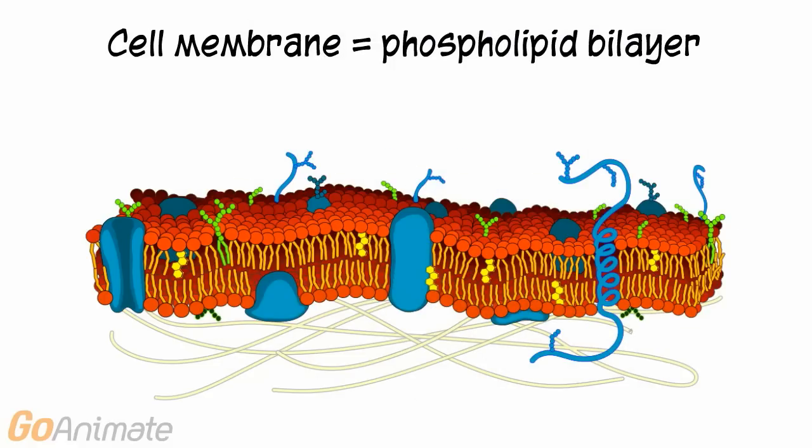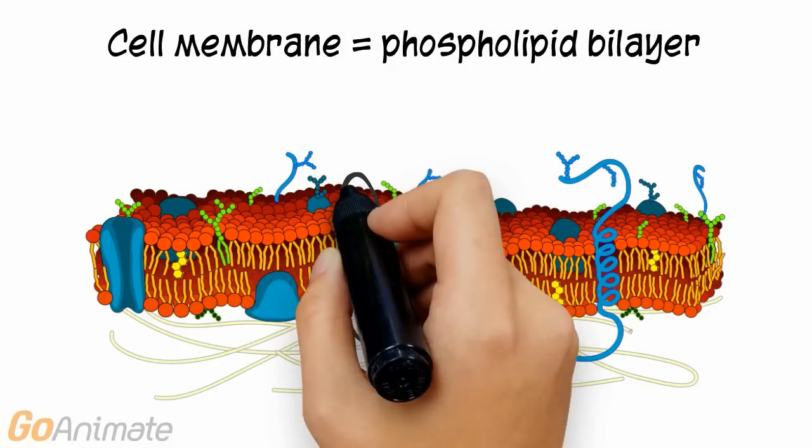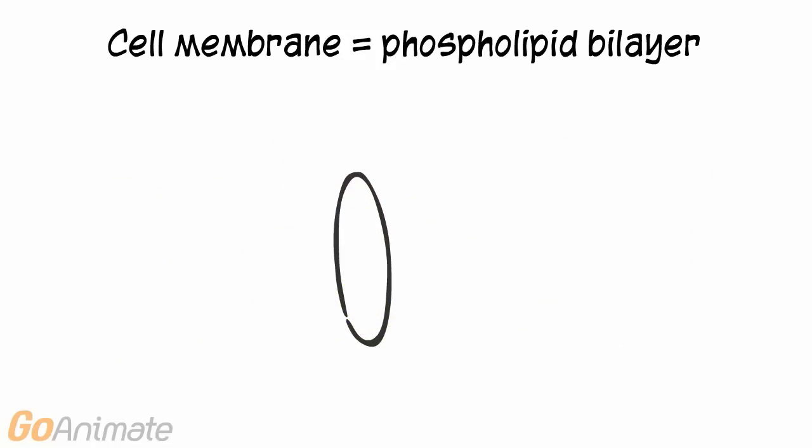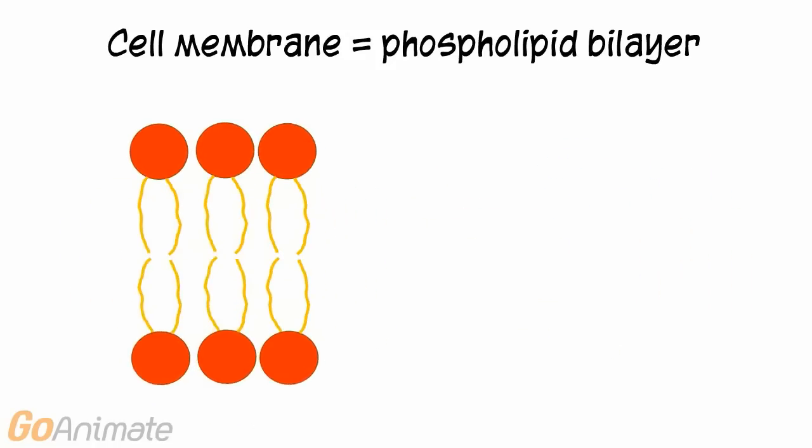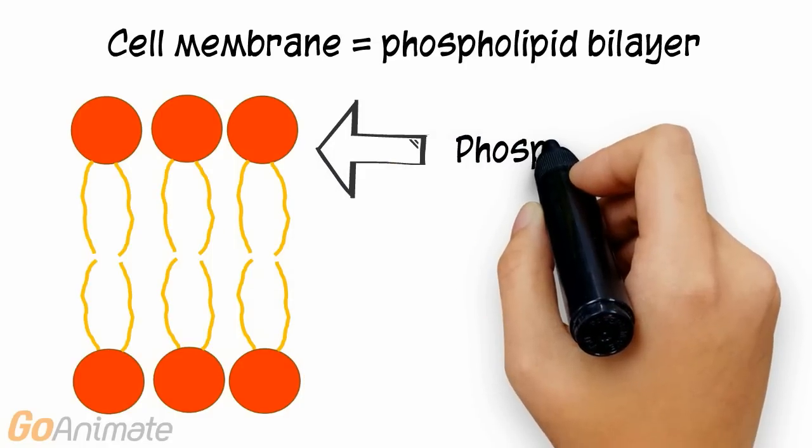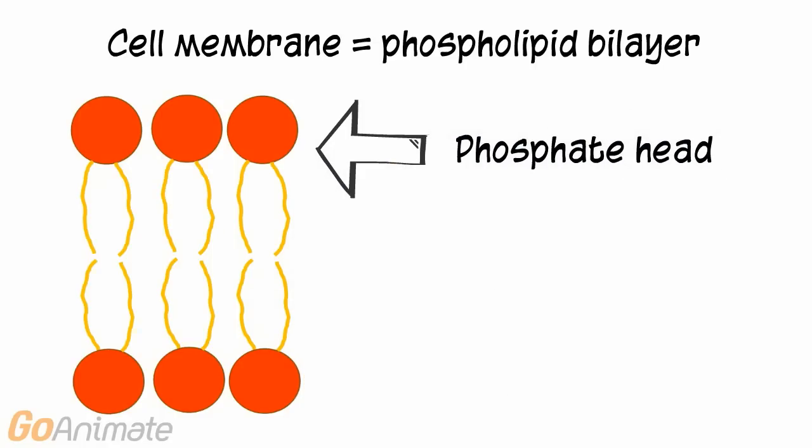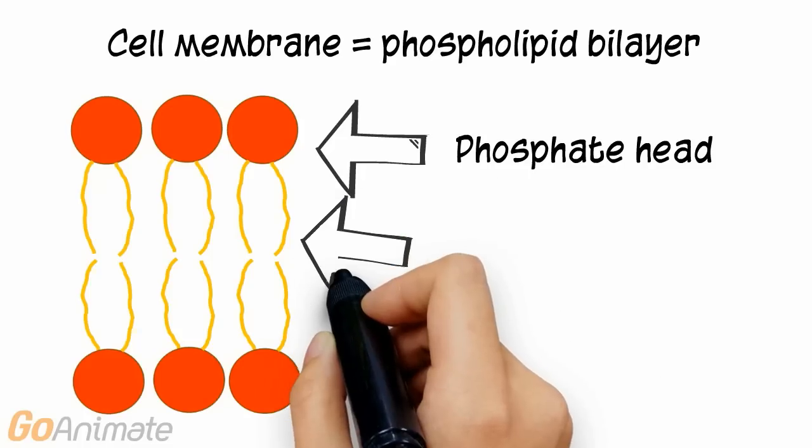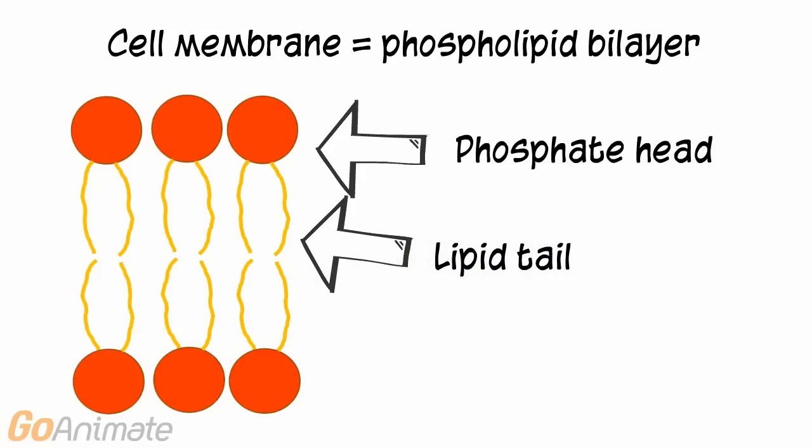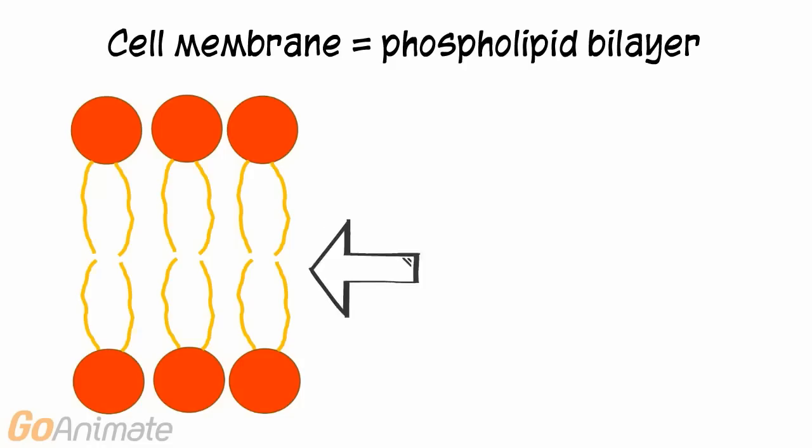The cell membrane consists of a phospholipid bilayer. Phospholipids consist of a phosphate head that loves water, or hydrophilic, and a lipid tail that hates water, or hydrophobic. The phospholipids arrange themselves into a bilayer with the head pointing outward and the tails pointing inward.